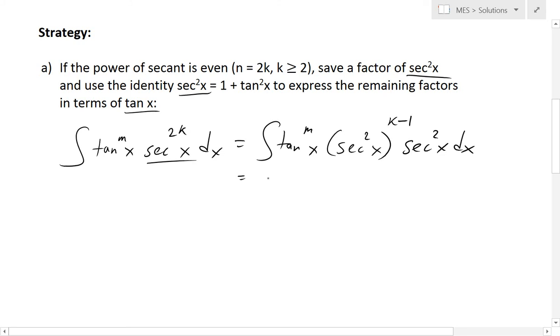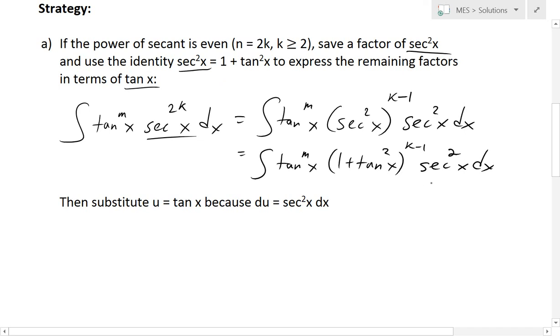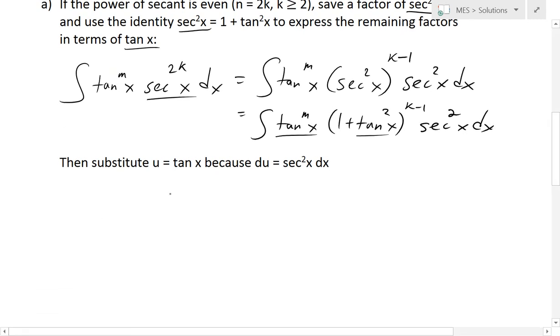The reason for this: we have tan^m(x) and now we apply the identity, so this is (1 + tan²x)^(k-1) sec²(x) dx. We have everything in terms of tan except this secant squared of x that's separated. The reason is because when we use substitution rule, we substitute u = tan x, because the differential du = sec²(x) dx, so this entire term is this.